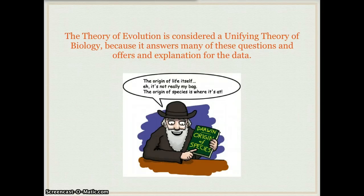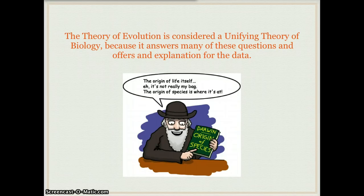The theory of evolution is considered a unifying theory of biology. It unites all of the units we've been talking about throughout the year because it answers many of the questions we've posed and offers an explanation for the data. I want to emphasize that the theory of evolution does not talk about the origin of life — how life started. Really what we're talking about is how species originated, how life became different, how we got so many different animals, plants, and organisms.